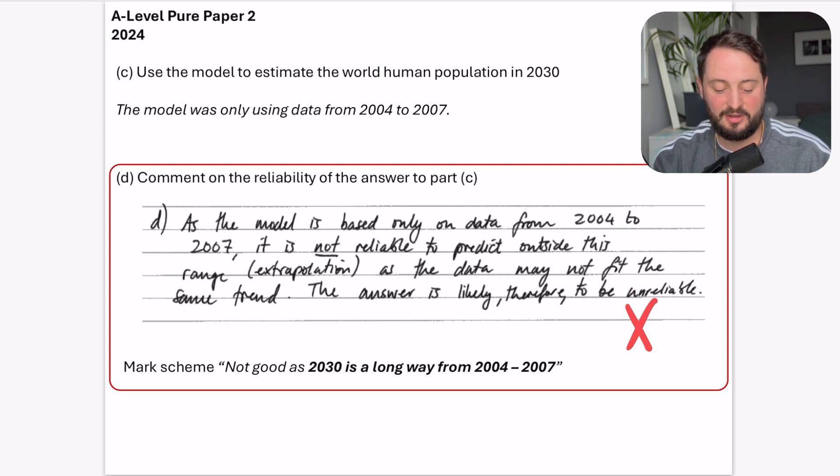This is because in the mark scheme, they were looking for it to be something like in 2030, it's not good, or it's not good a model because in 2030, it is a long way from 2004 to 2007. They are not bothered about the word extrapolation. They wanted me to have stated that 2030 was far away from that range.